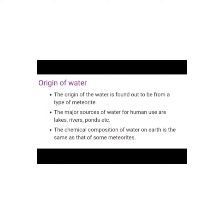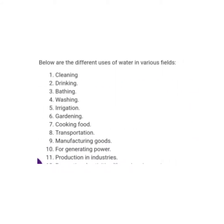The chemical composition of water on earth is the same as that of certain meteorites. Now, uses of water include cleaning, drinking, bathing, washing, irrigation, and gardening. These are the uses of water which you can see on the screen.